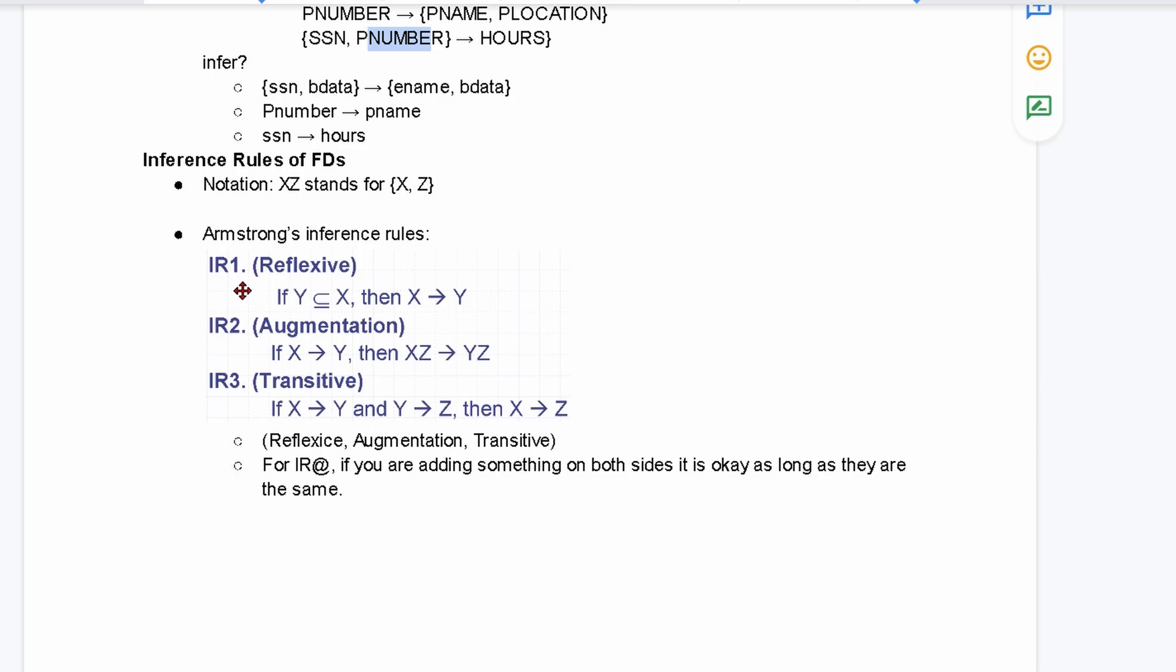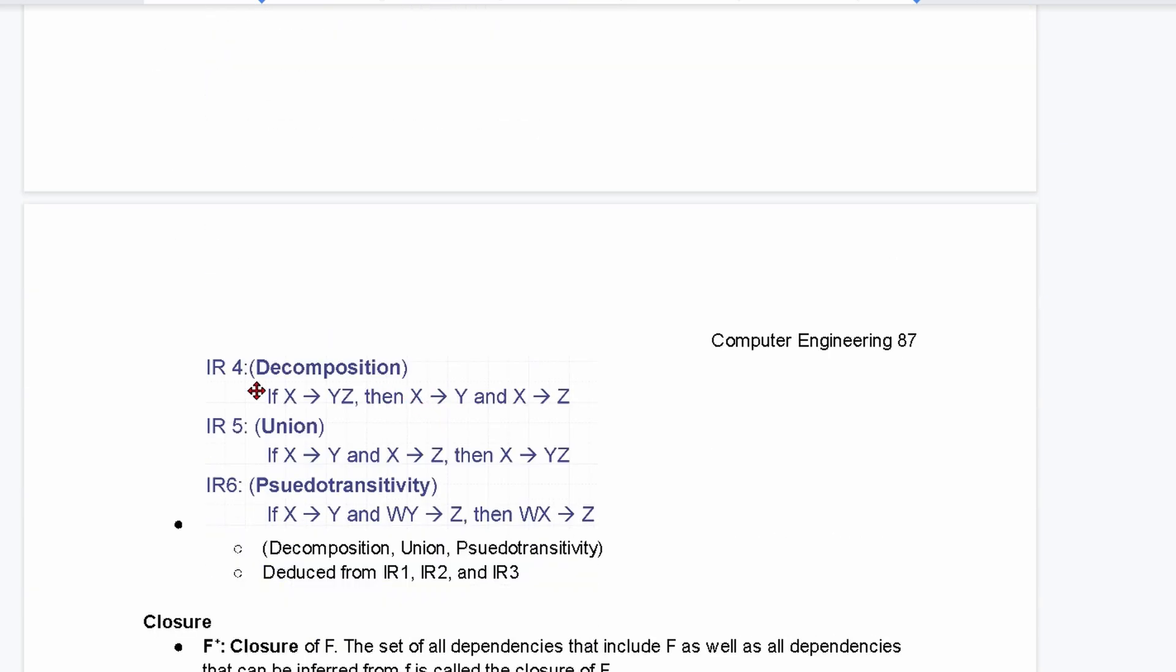We have six. We have reflexive, augmentation, transitive, we have decomposition, union, and pseudo, or pseudo transitivity.